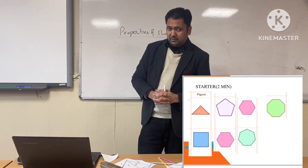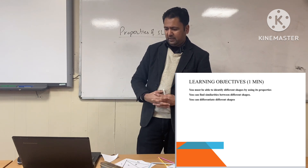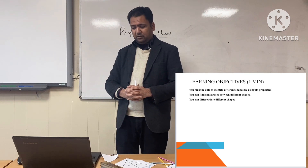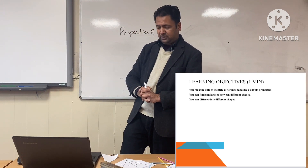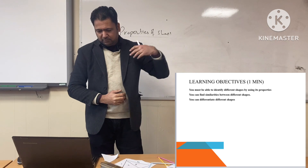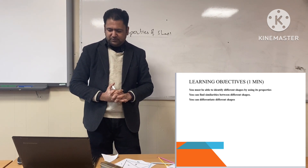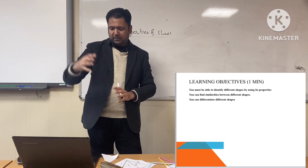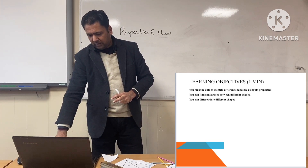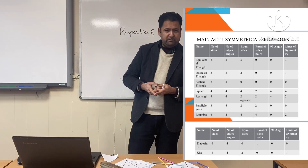Now our learning objectives for today — why we are here in this lesson. Read out the first learning objective. You must be able to identify different shapes by using their properties. The second learning objective: you can find similarities between different shapes. And the third one: you can differentiate different shapes.